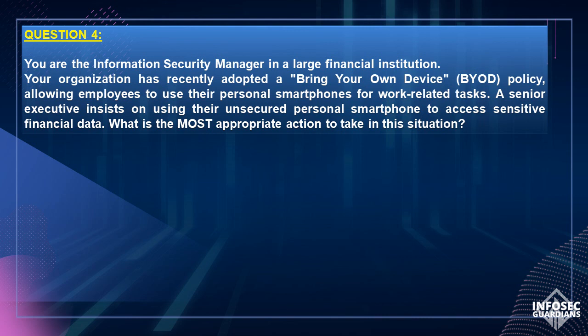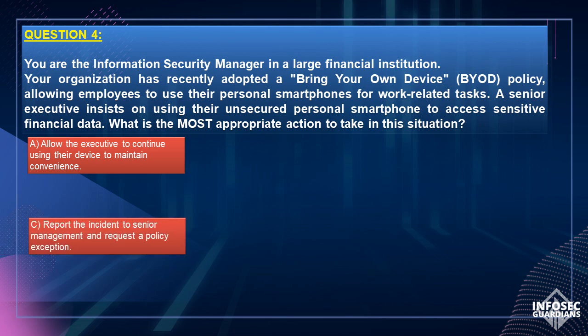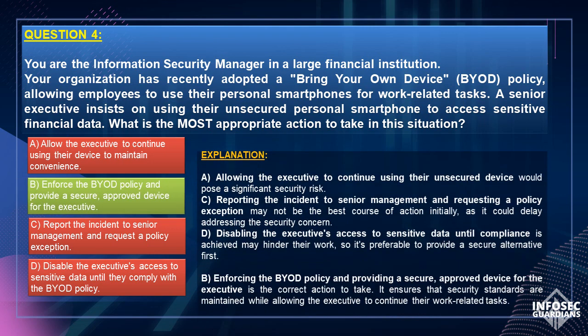Let us review each option one by one. Option A, allowing the executive to continue using their unsecured device, would pose a significant security risk. Option C, reporting the incident to senior management and requesting a policy exception, may not be the best course of action initially, as it could delay addressing the security concern. Option D, disabling the executive's access to sensitive data until compliance is achieved, may hinder their work, so it's preferable to provide a secure alternative first. Option B, enforcing the BYOD policy and providing a secure, approved device for the executive, is the correct action. It ensures that security standards are maintained while allowing the executive to continue their work-related tasks. Hence, Option B is the correct answer.